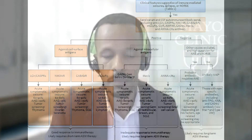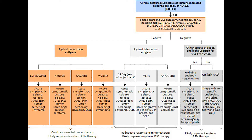Although evidence is still limited, the current recommended first-line treatment for acute symptomatic seizures secondary to autoimmune encephalitis is immunotherapy with either intravenous or oral steroid, IV immunoglobulin, or plasma exchange. Typically, patients with antibodies against cell surface antigens are more likely to respond to immunotherapy, especially when diagnosed early. In contrast, those with neuronal antibodies against intracellular antigens will require long-term anti-seizure medication therapy.